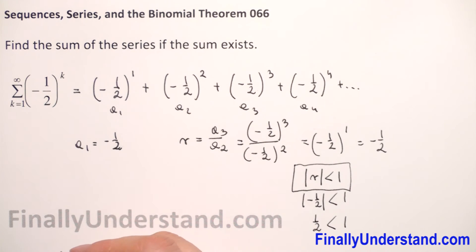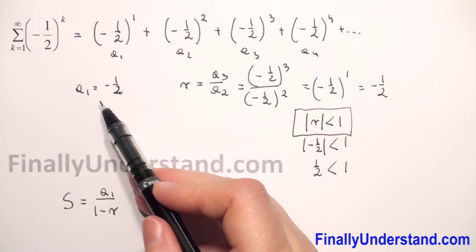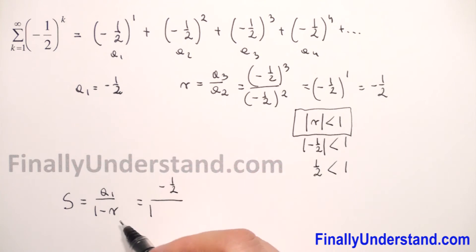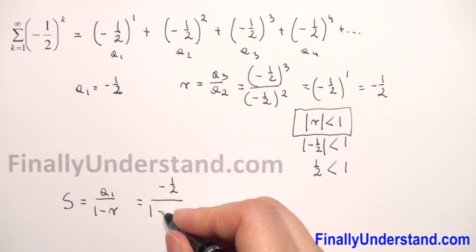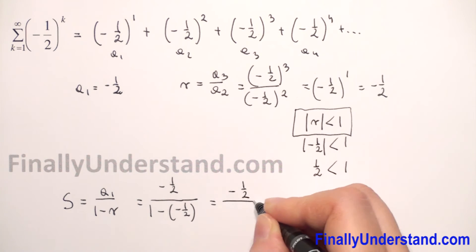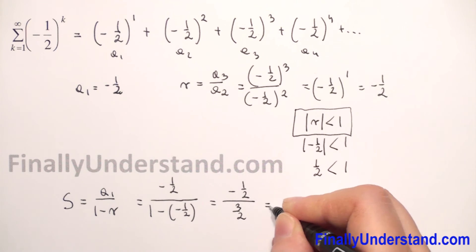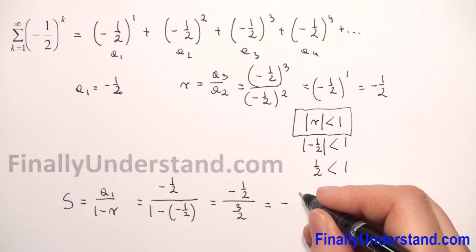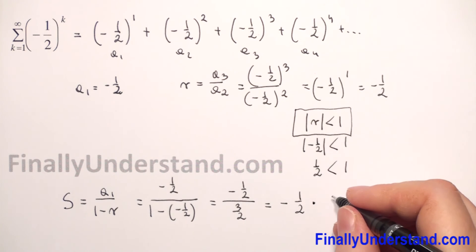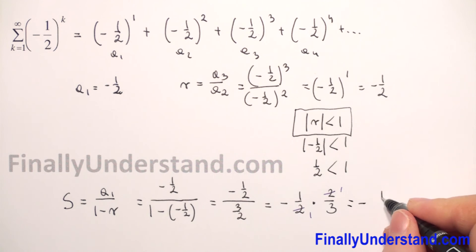The sum is given by the formula S equals a1 over 1 minus r. We have a1 equals negative 1 half, and r equals negative 1 half. So we get negative 1 half over 1 minus negative 1 half. The denominator becomes 1 plus 1 half, which is 3 over 2. Dividing fractions, we rewrite this as negative 1 half times 2 over 3. We can reduce the 2s, leaving negative 1 over 3.